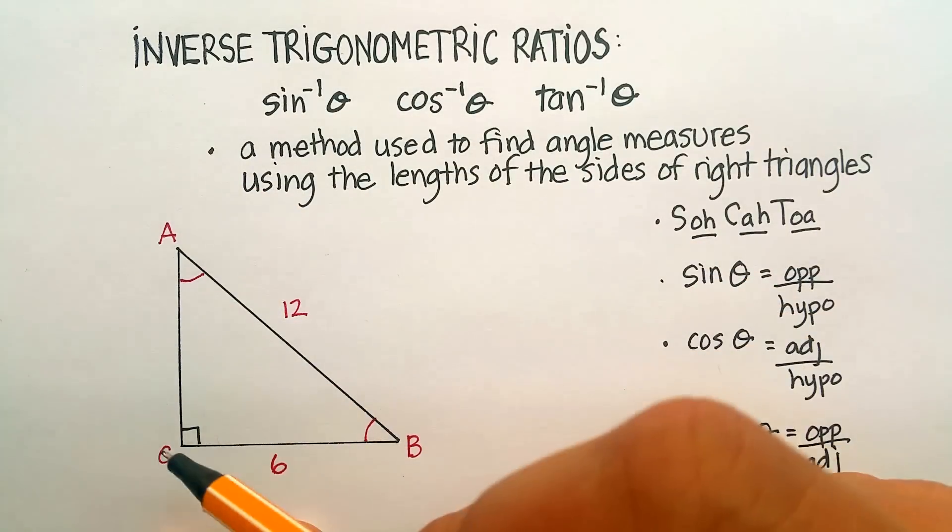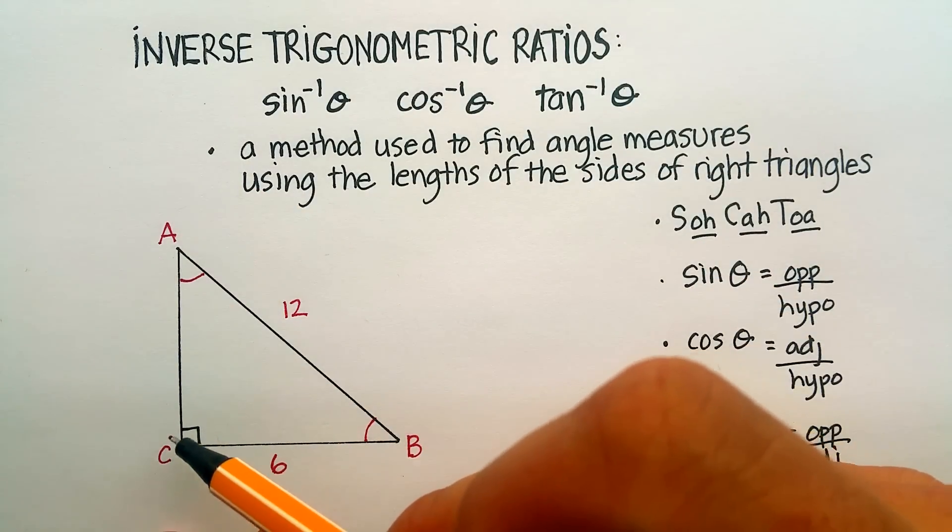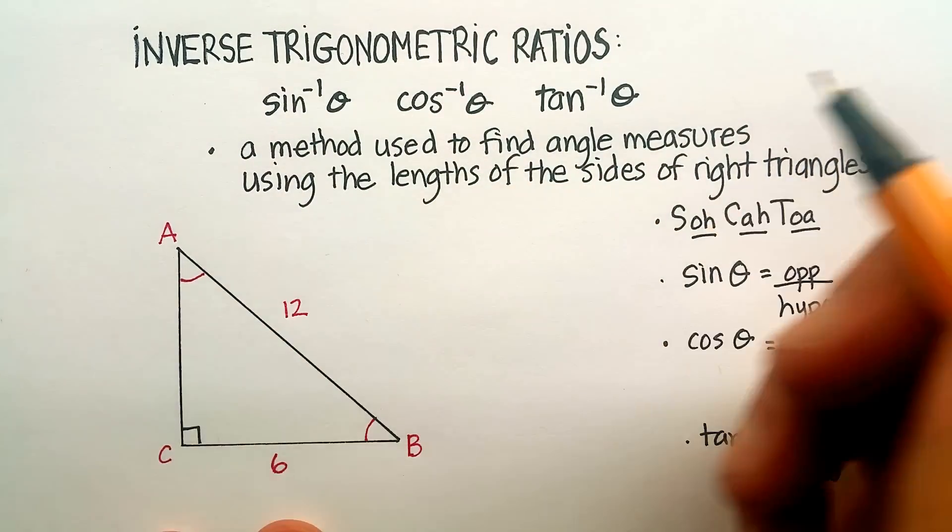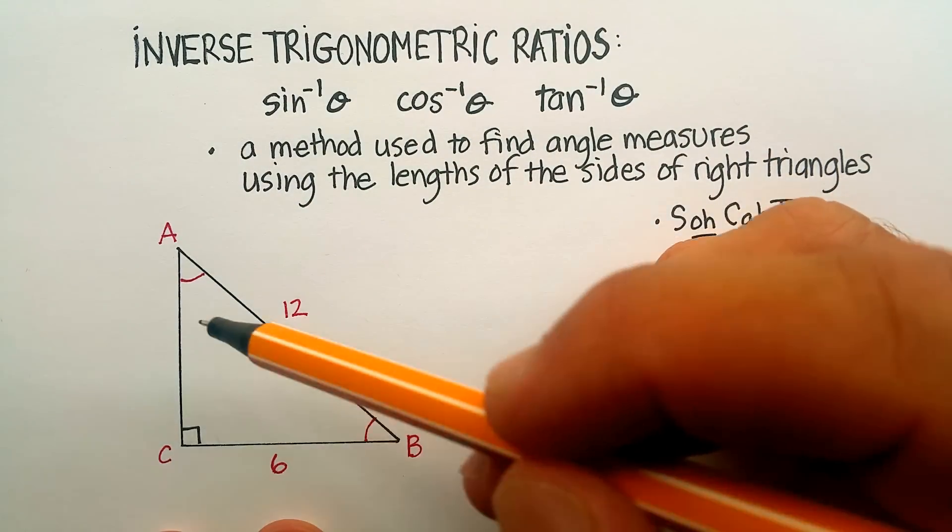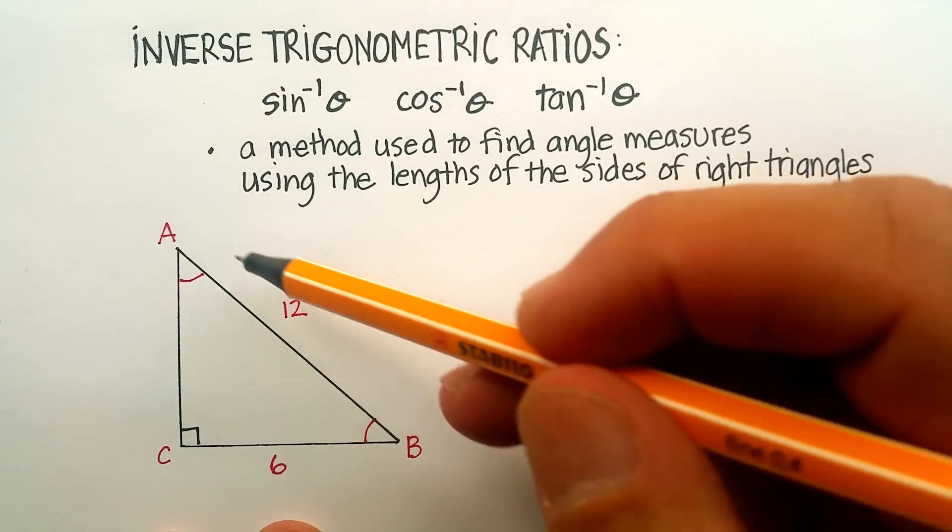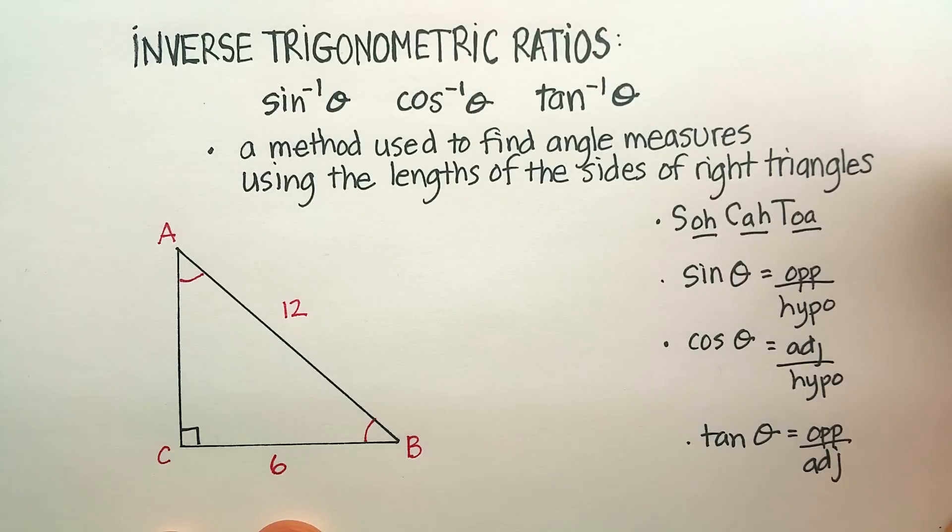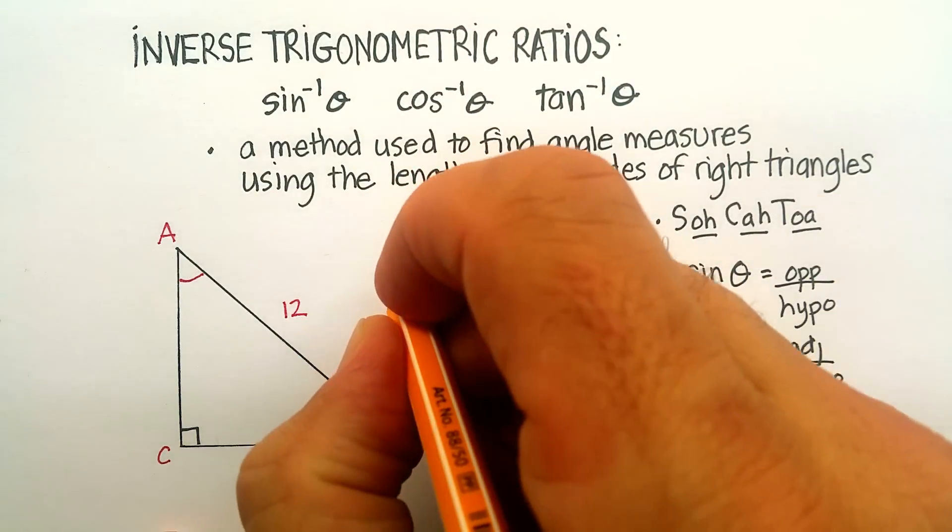So here we have a right triangle. I know that because of this little box here indicating a 90-degree angle, but I want to find angle A. I don't know what angle that is, but I do know that the hypotenuse is 12, and I know that one of the legs is 6. So let's do this.